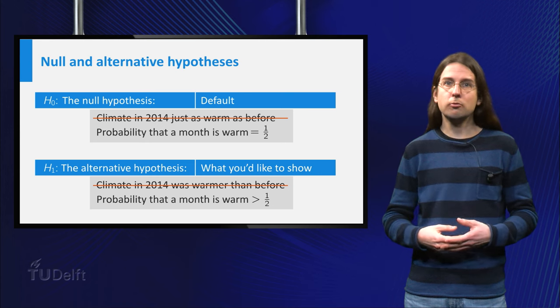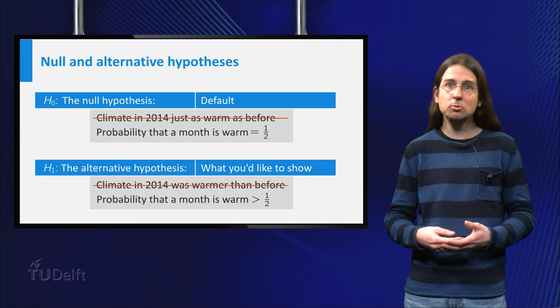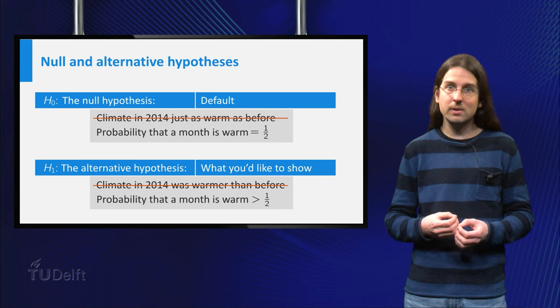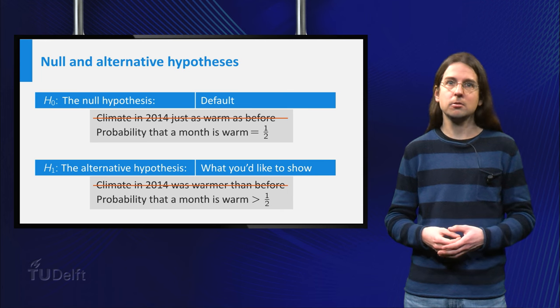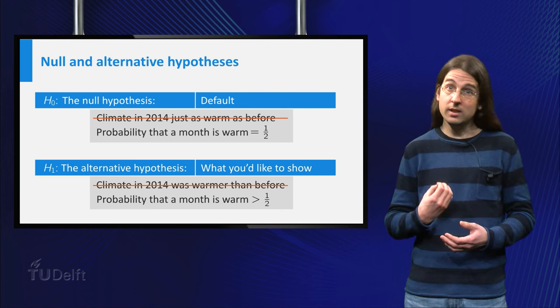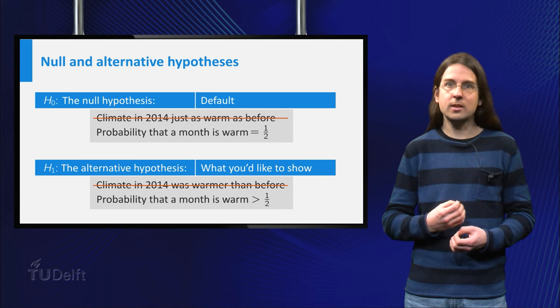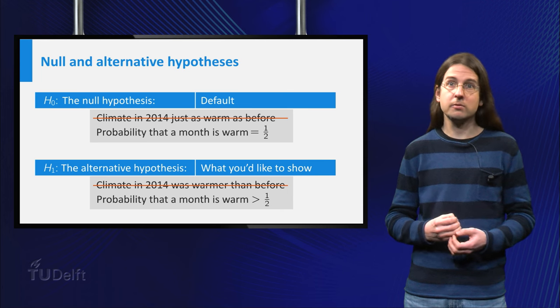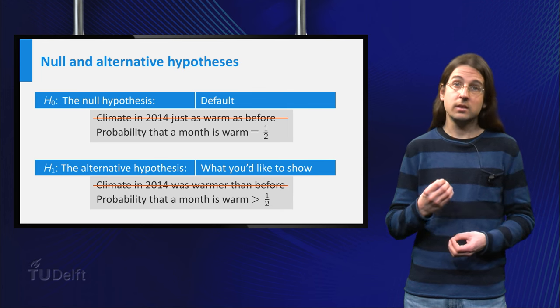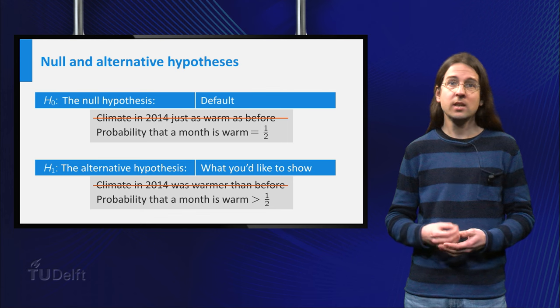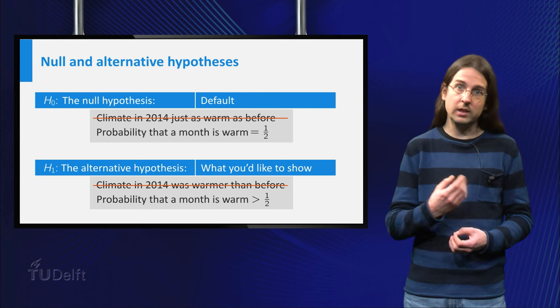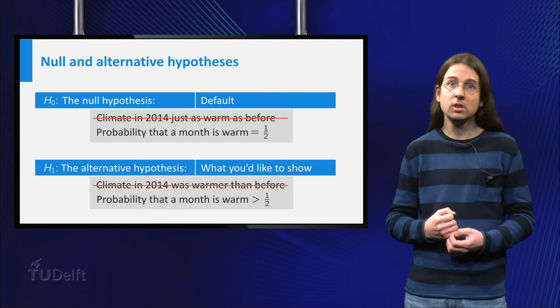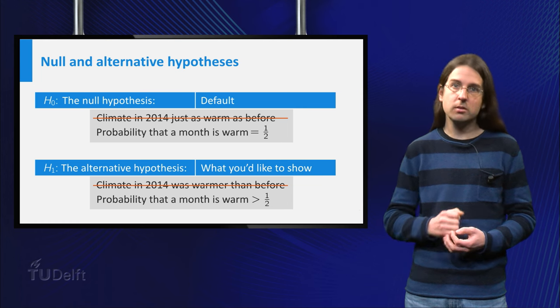Technically, you should formulate H0 in such a way that you can calculate probabilities assuming H0 is true. In this case, we have to add the assumption that the probabilities that different months are warm are independent of each other. Then we can calculate the probability that our observation of 11 out of 12 months are warm would occur if H0 were true.